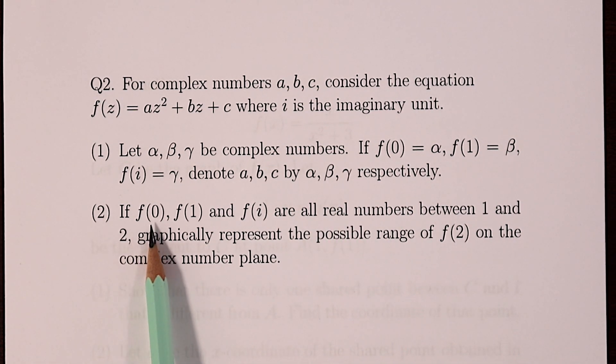Part two asks if f(0), f(1), and f(i) are all real numbers between one and two, graphically represent the possible range of f(2) on the complex number plane. Now I'm going to come back in a moment and show my full solution to this one, but in the meantime maybe have a think about it.